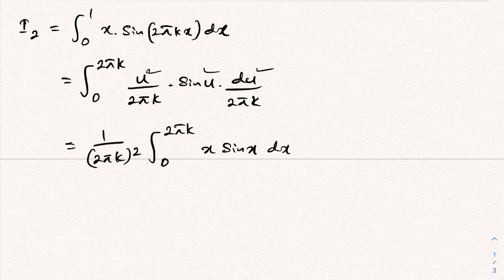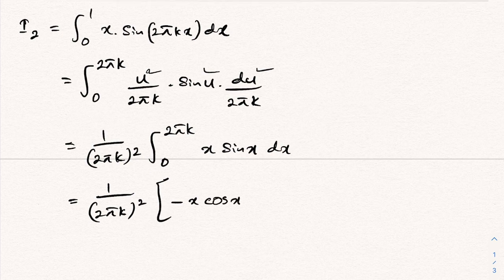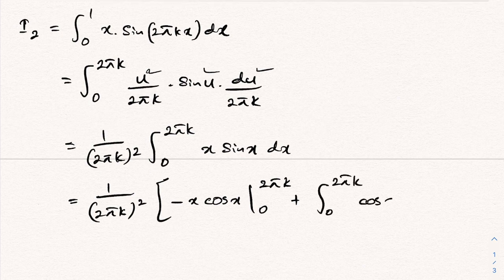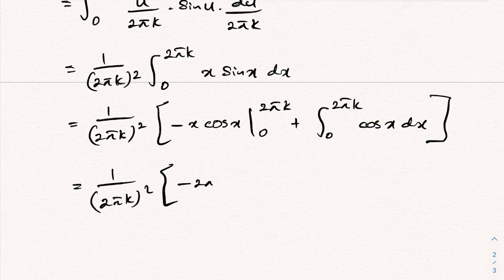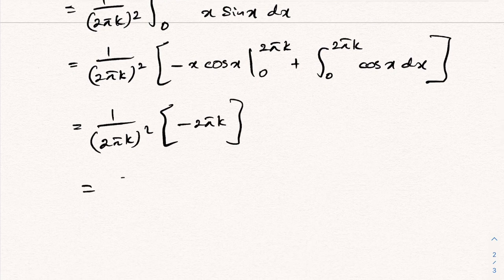Applying integration by parts to ∫u·sin(u)du: we get −u·cos(u) from 0 to 2πk, plus ∫cos(u)du from 0 to 2πk. This gives −2πk·cos(2πk) = −2πk. Multiplying by 1/(2πk)², the 2πk cancels, giving I2 = −1/(2πk).